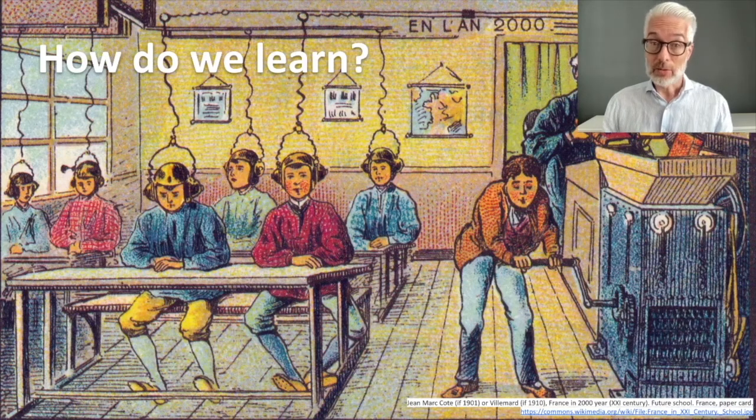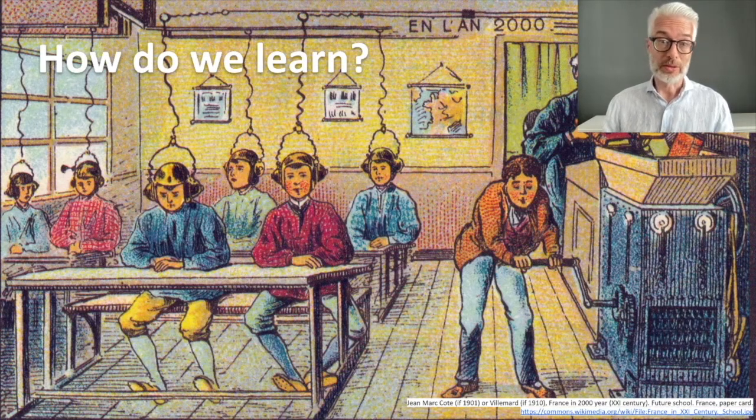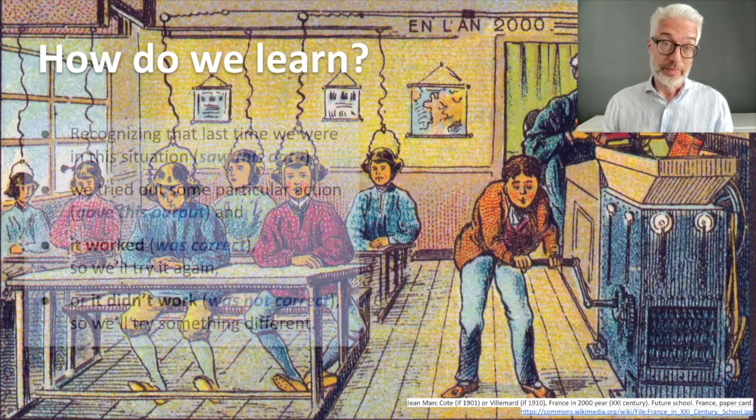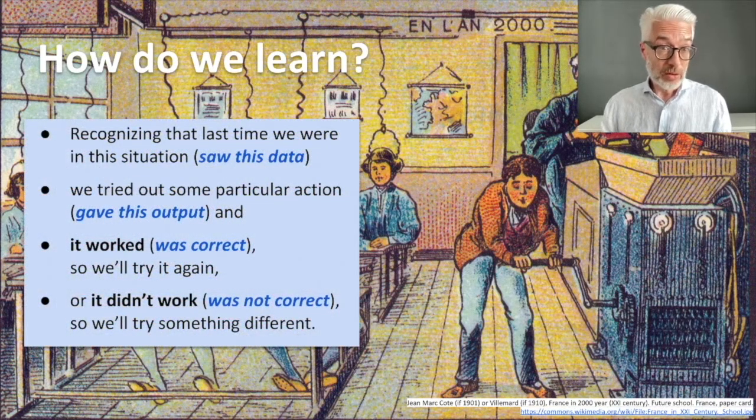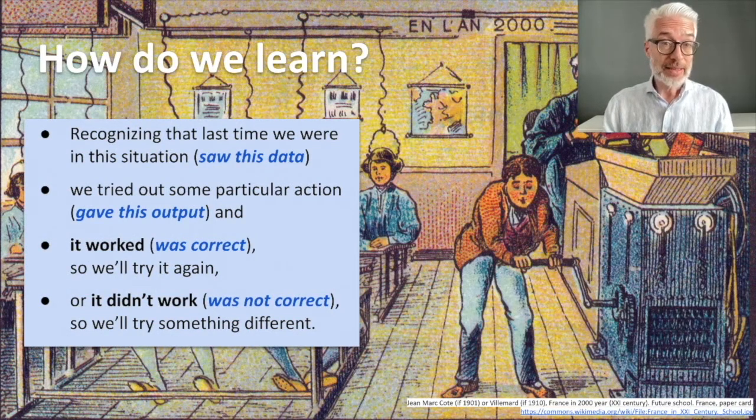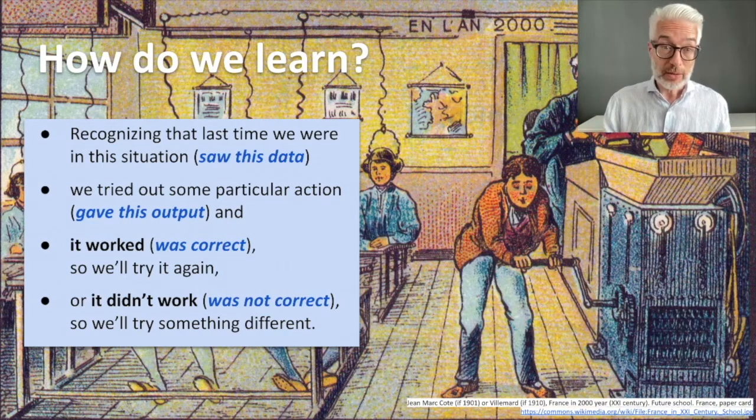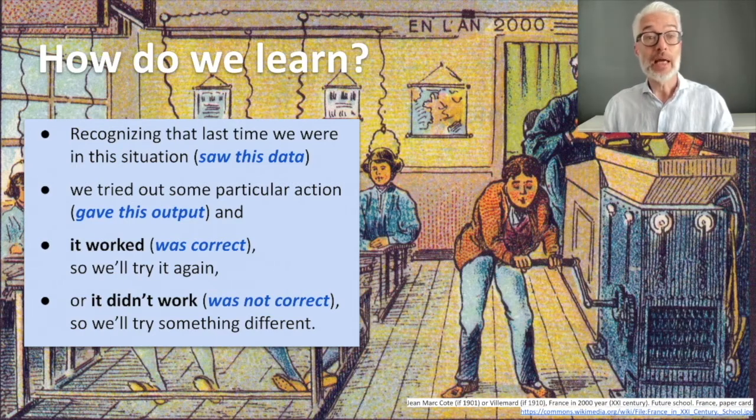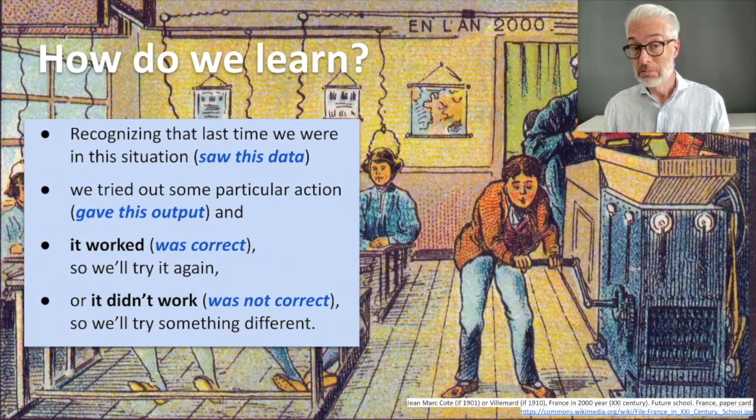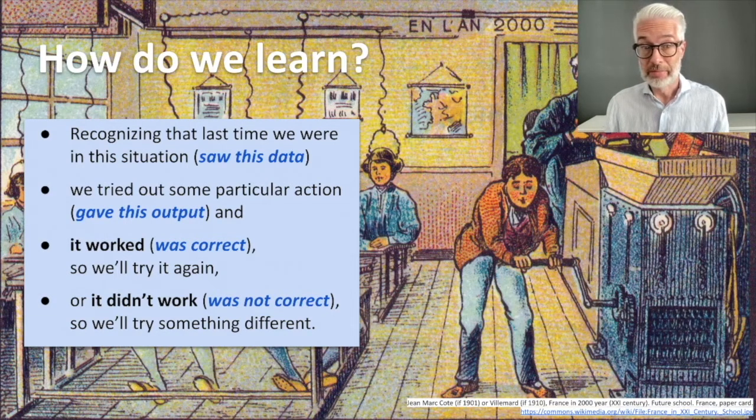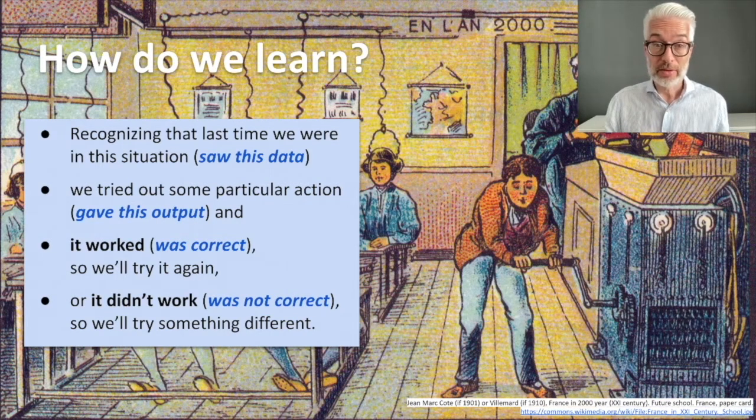To answer that question, we first ask ourselves how do we learn as humans? That's quite easy. Imagine you are in a specific situation, recognizing that last time we were in exactly this situation. We tried out some particular action which gave this kind of output. If it worked well, meaning it was correct, we'll try it again. If it didn't work out well, we know it was not correct, so we try something different.